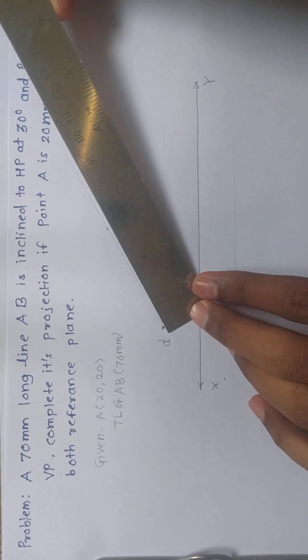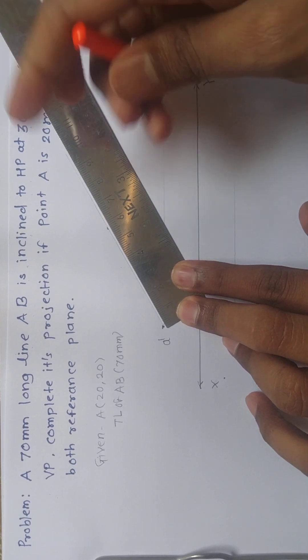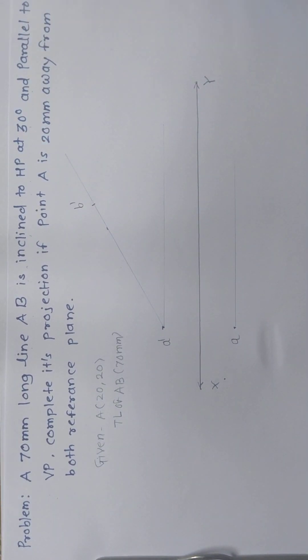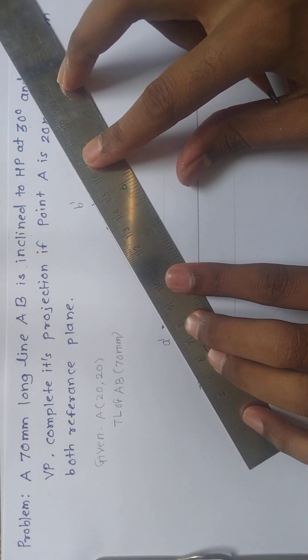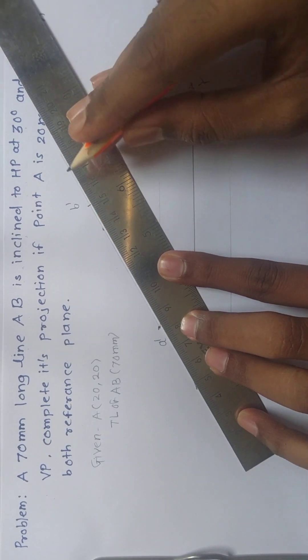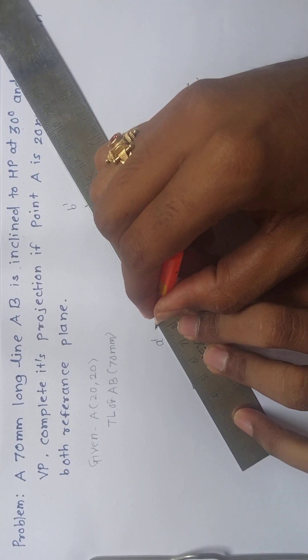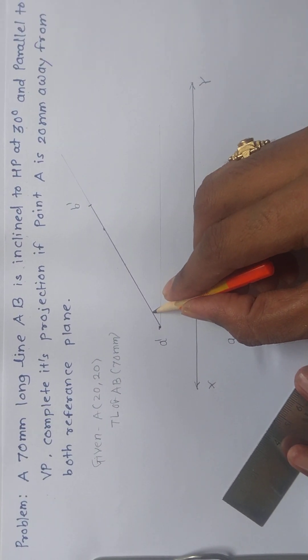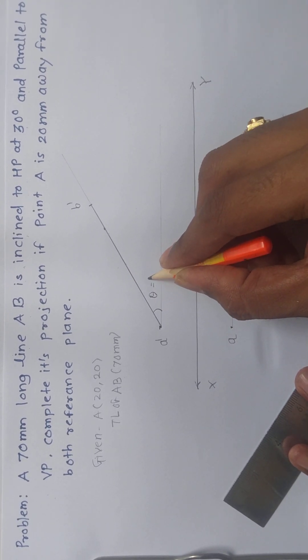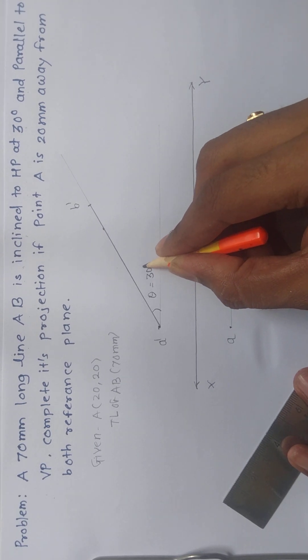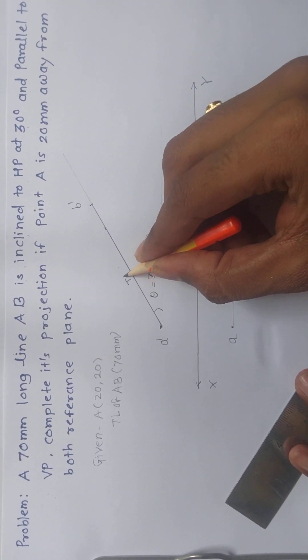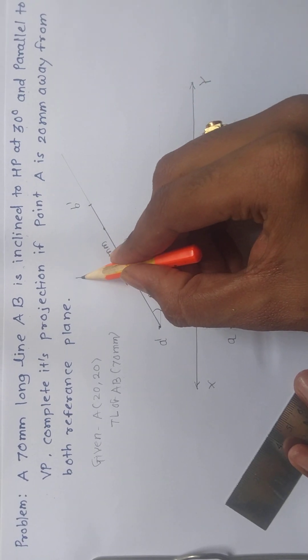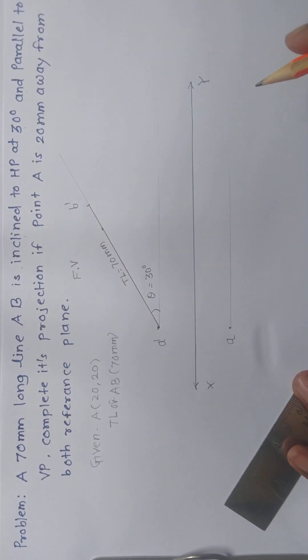You can mark 70mm here with the scale, and this will be the B dash point. This is theta 30 degrees, and this is the true length 70mm. We completed the front view.